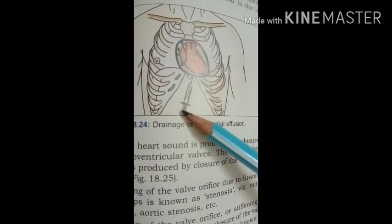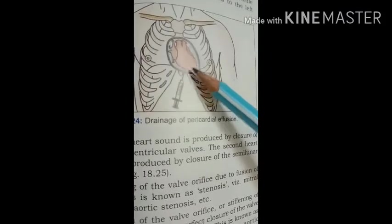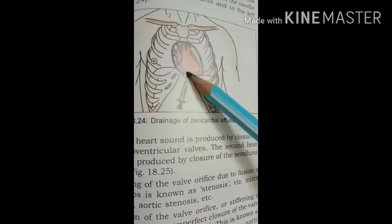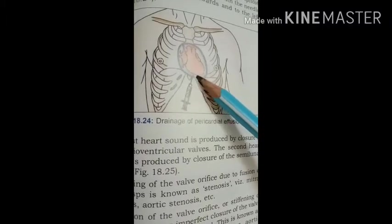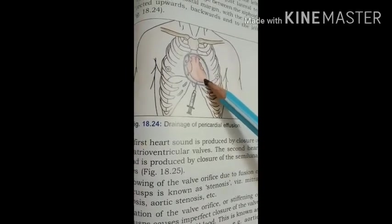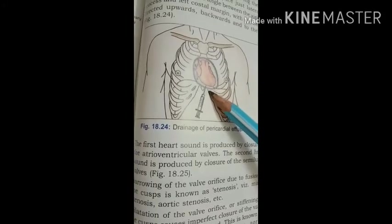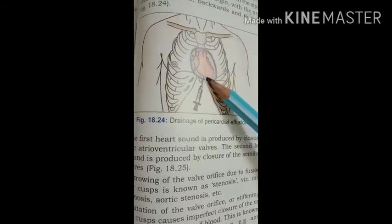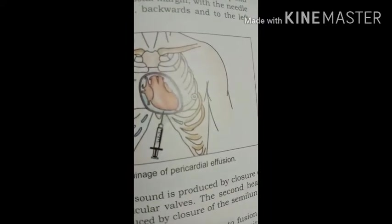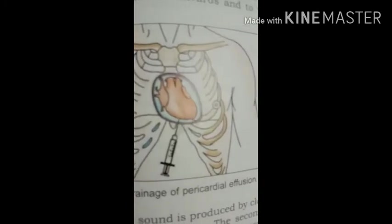The second drainage method is inserting the needle at the left costoxiphoid angle — the angle between the xiphoid process and the costal cartilage — directing it upward and backward at a 45-degree angle to the skin. The needle then enters the pericardial cavity and the fluid is drained. This procedure of aspirating fluid from the pericardial cavity is called pericardiocentesis.